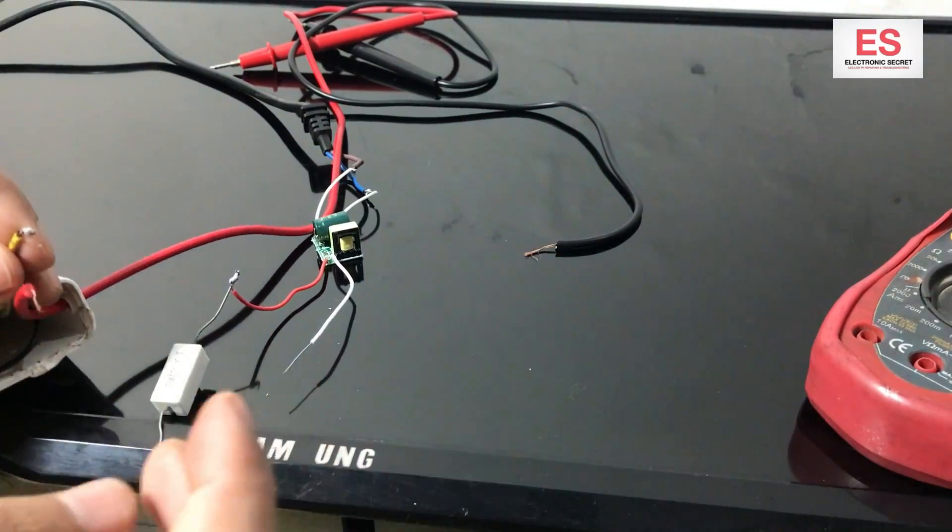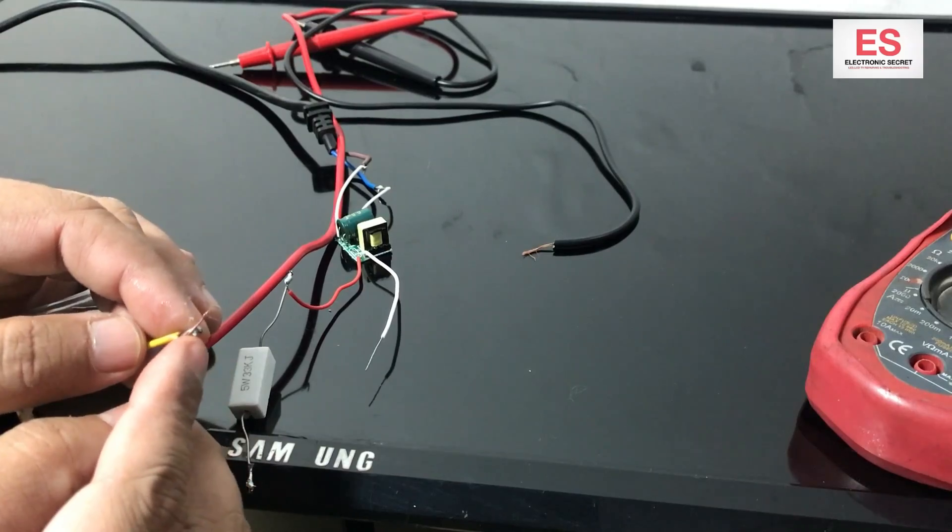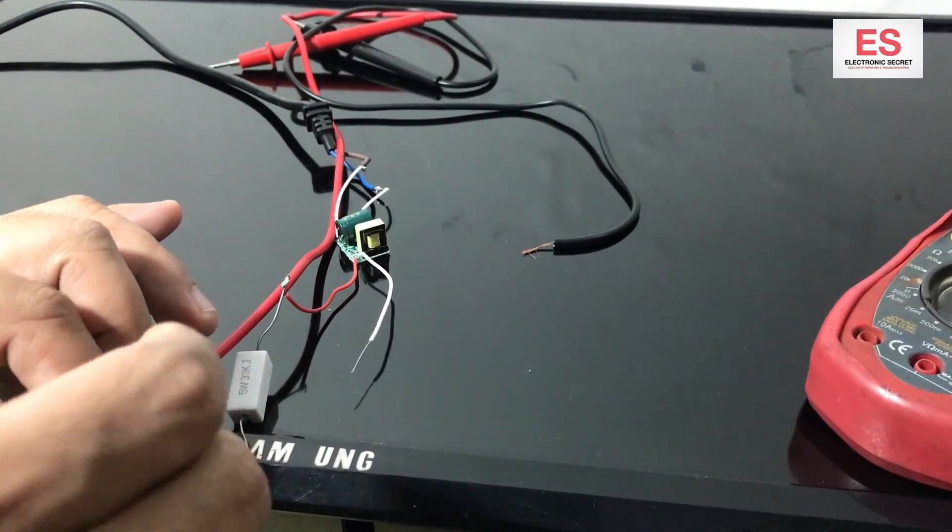Now take this yellow wire and red probe and the resistor and solder them. Make a hole into the casing and pass the red probe wire from there so it will not mess up in future. Now yellow and red wires are connected.